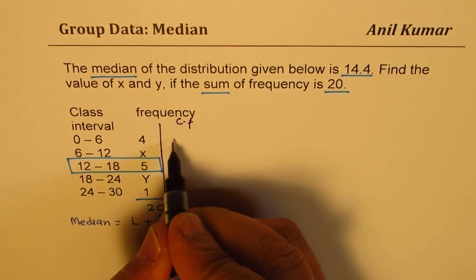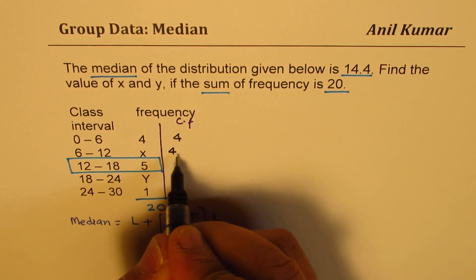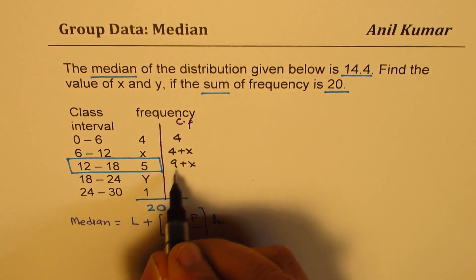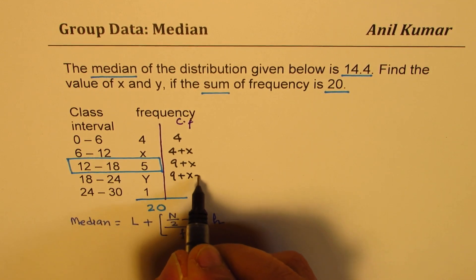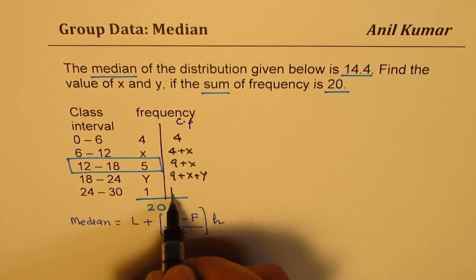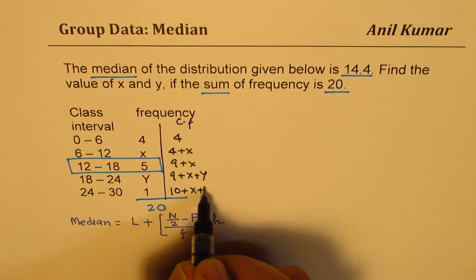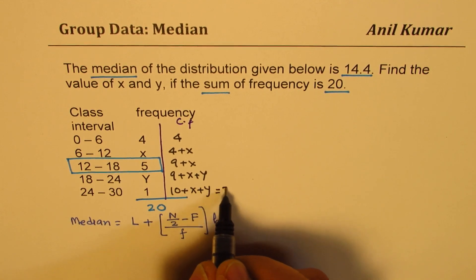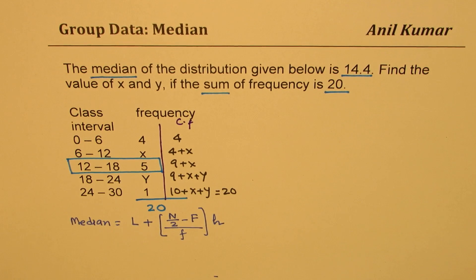Adding the terms: first we get 4, then we get 4 plus x, adding 5 gives 9 plus x, adding y gives 9 plus x plus y, and adding 1 is 10 plus x plus y, and that should be equal to 20. So that gives you one equation.